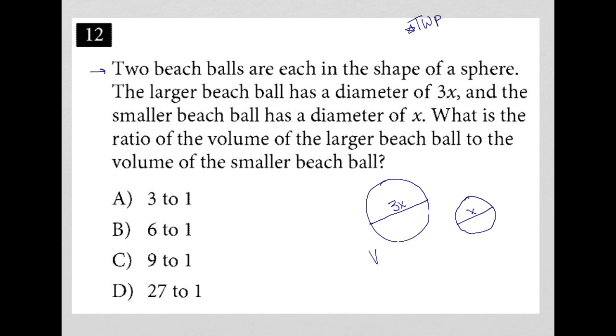But once you flip your page back there, what you'll see is that the volume of a sphere is equal to 4 thirds pi r cubed. And therefore, for the large beach ball, it would be 4 thirds pi. And then r would be like 1.5 or, let's keep it fractions, 3 halves, right, half of 3, 3 halves x and then cubed.